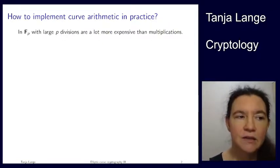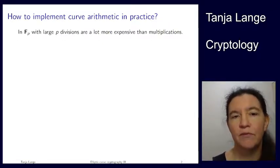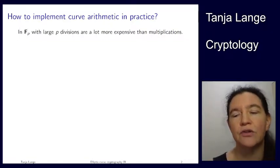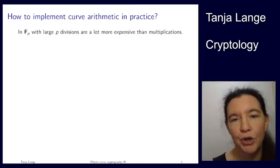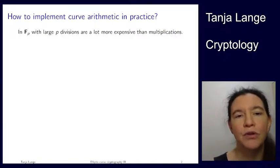So we have seen three different curve shapes. We have seen Edwards and Twisted Edwards curves, we have seen General Weierstrass curves and Short Weierstrass curves, and we have seen Montgomery curves. And for each of those, I showed you how the computations work.